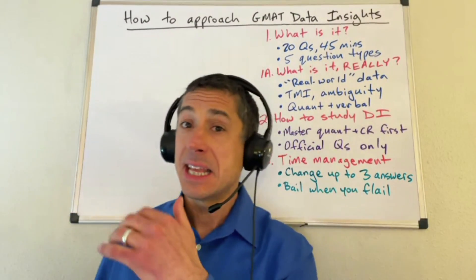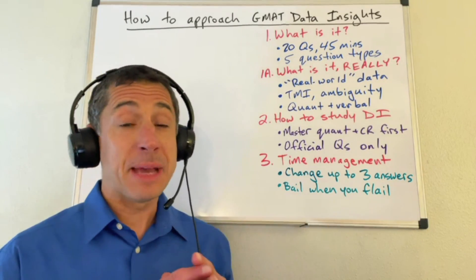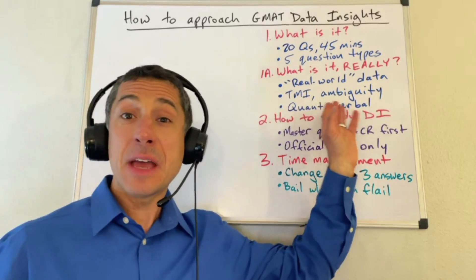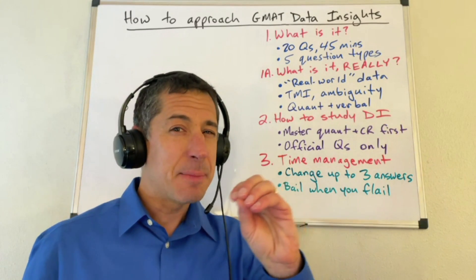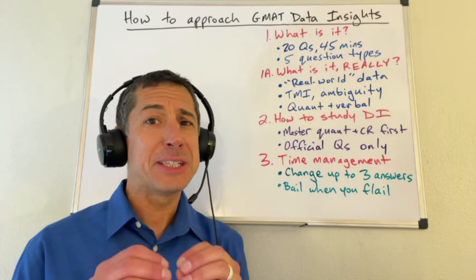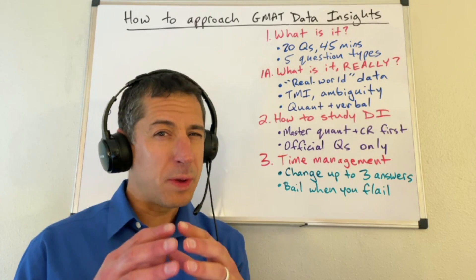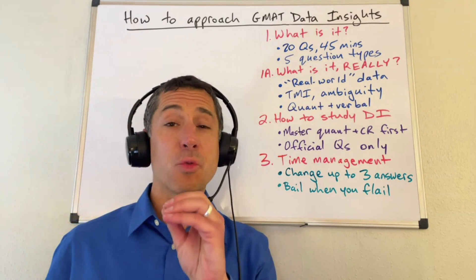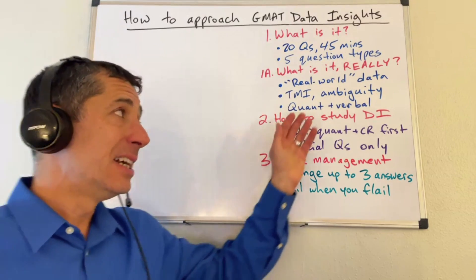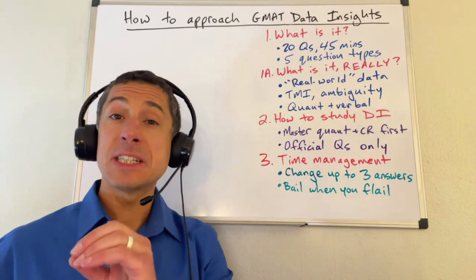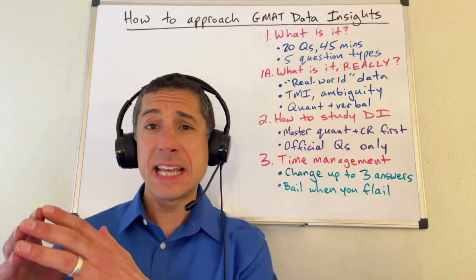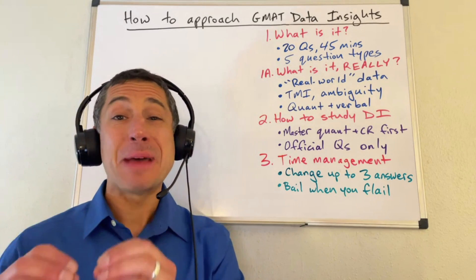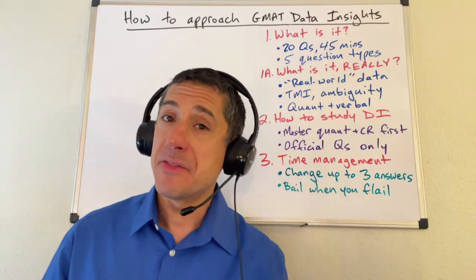If you're a perfectionist tackling data insights, you might have some trouble because some of these things are deliberately not perfect, just like in the real world. When I say TMI — too much information — you're going to see that as a theme throughout our videos on data insights. You've got to cut to the heart of what you actually need to answer a particular question. There's going to be a feeling of ambiguity a lot of the time. But when you really drill with great precision on the language used in the questions and texts, there's no ambiguity at all — there's just a feeling of it. Once you learn to pay attention to the language exactly as GMAT has written it, the test is going to feel less ambiguous over time.